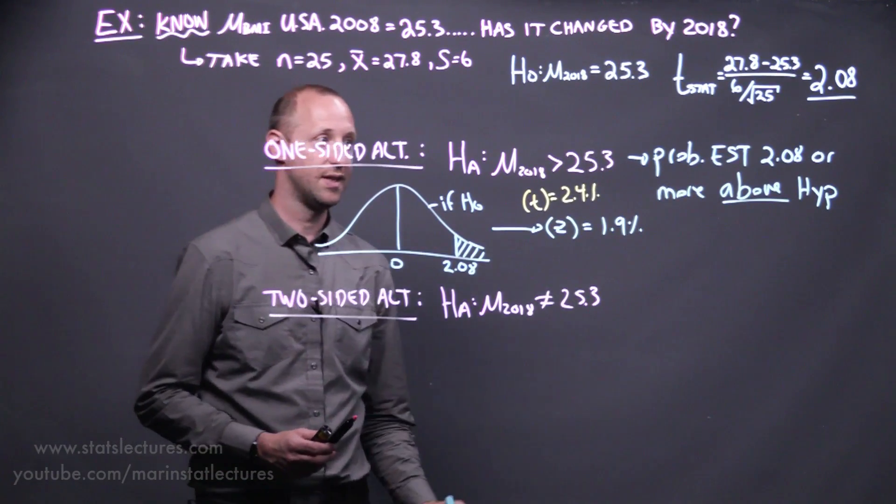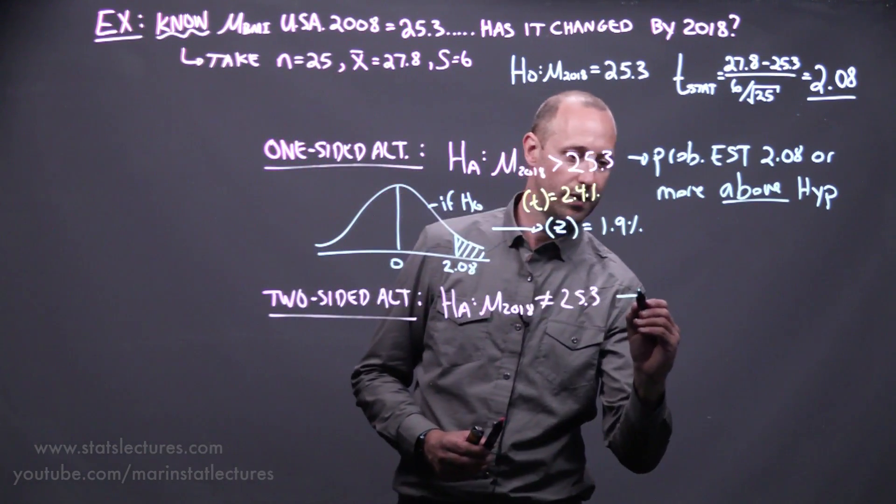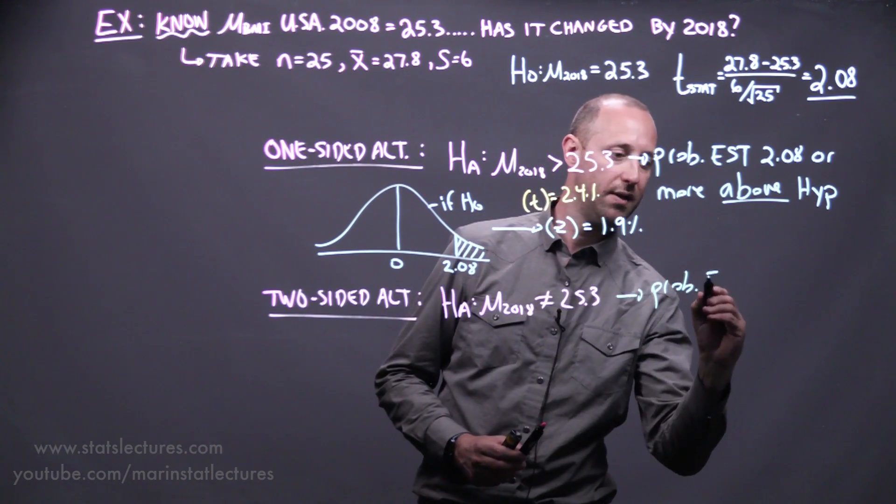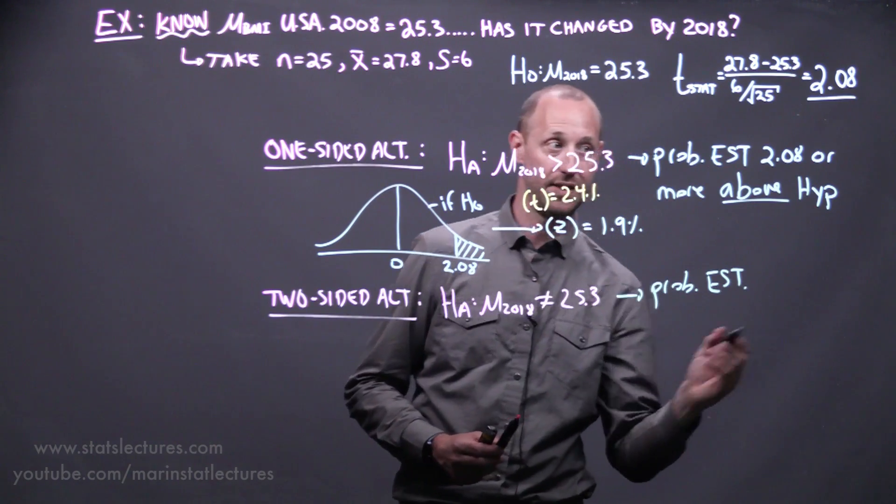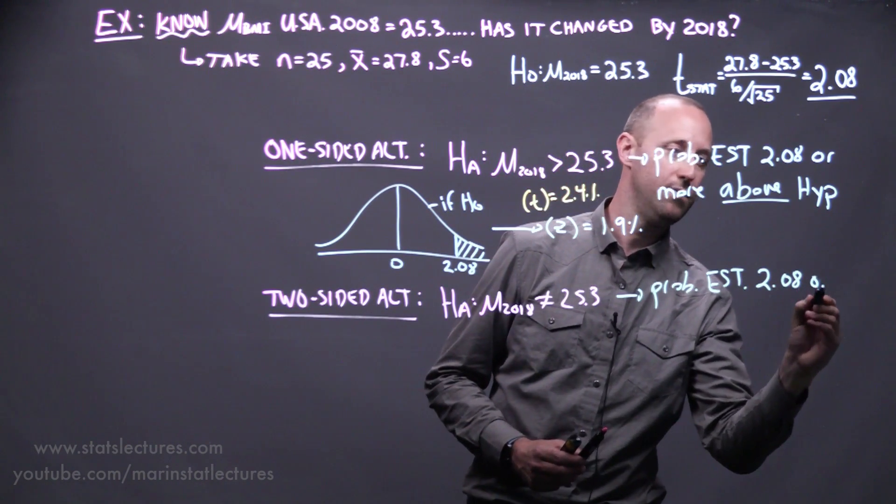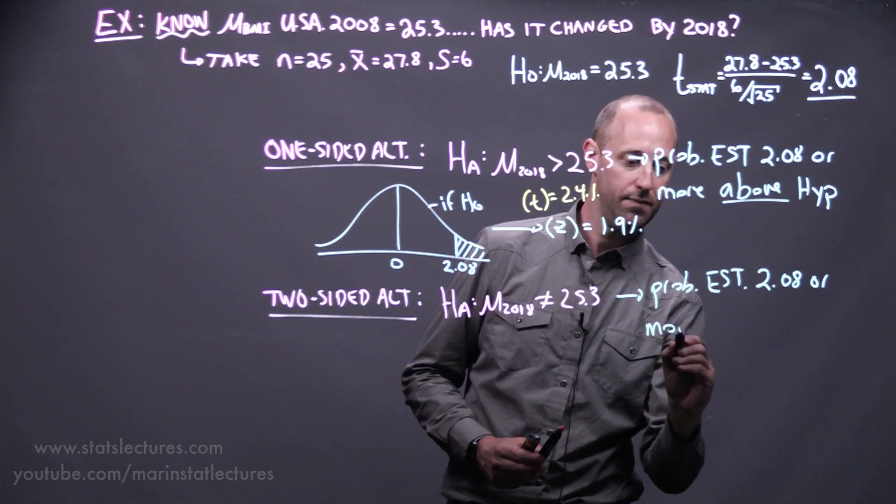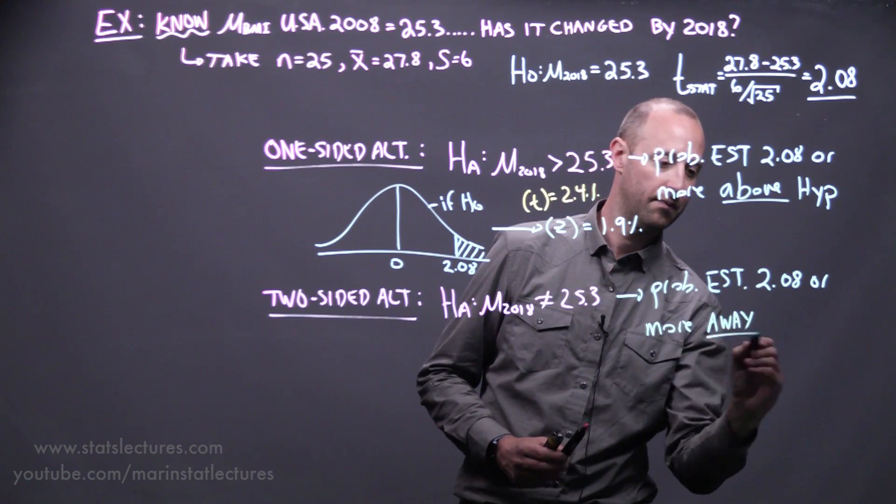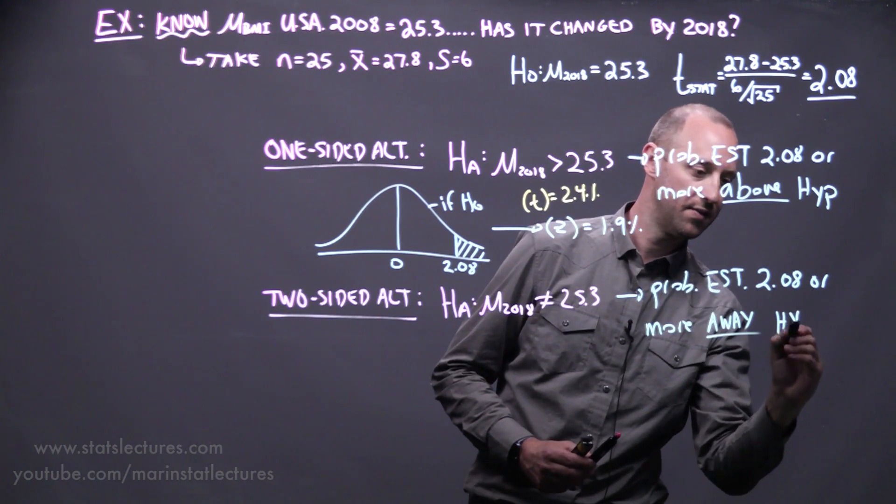Thinking about a two-sided test, here we're asking the question, what's the probability of getting an estimate, like the sample mean, that's 2.08 or more standard errors away from the hypothesized value?